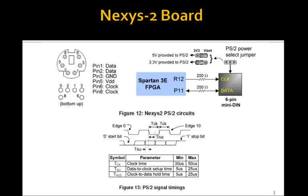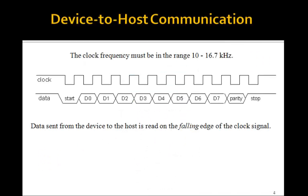The timing is shown here. We'll look at it over here. This is the device to host communication. Now the clock frequency must be in the range of 10 to 16.7 kHz, and the clock always comes from the device.